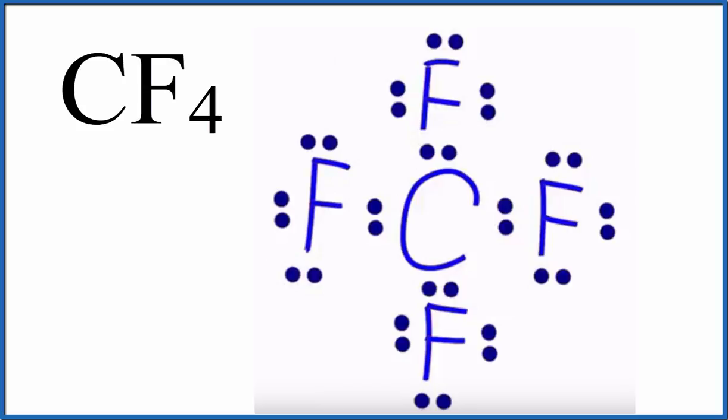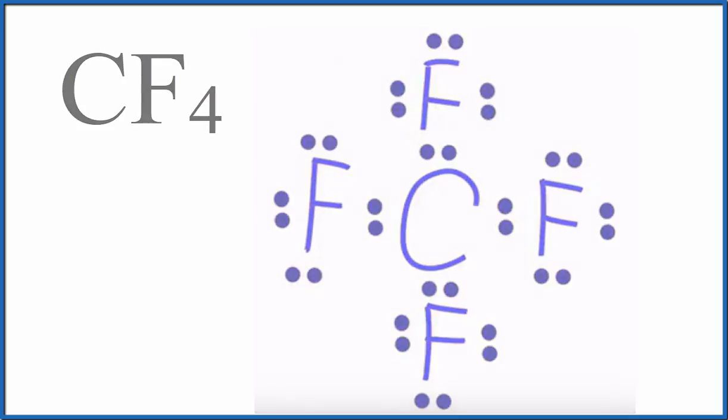In general, it looks like a symmetrical molecule. You can see the fluorines on each side of the carbon atom. But we need to look at the three-dimensional structure to see how those fluorine atoms are going to spread out and give us the shape of this CF4 molecule.